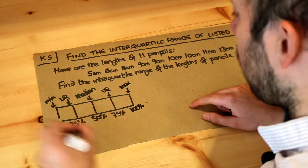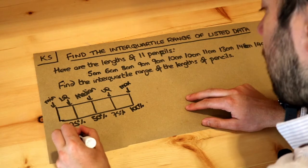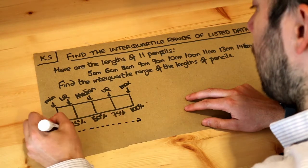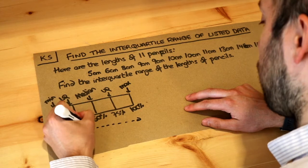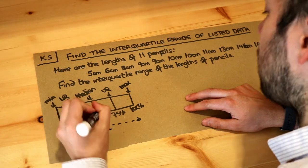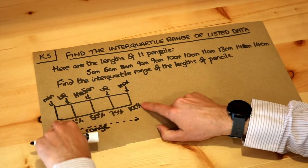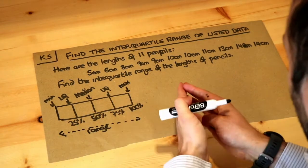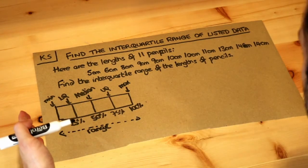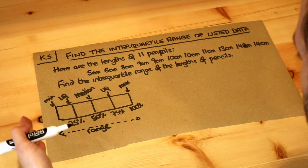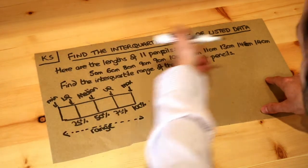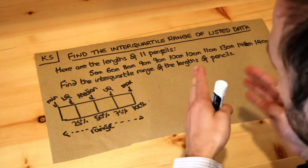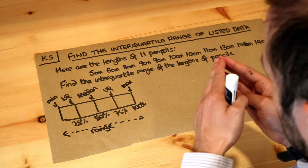The range of data is the difference between the smallest value and the biggest value. The range is useful because it tells us how spread out the data is — the width of your data. The more spread out your data is, the greater the range. If all the values were the same, the range would be zero, meaning your data has zero spread.